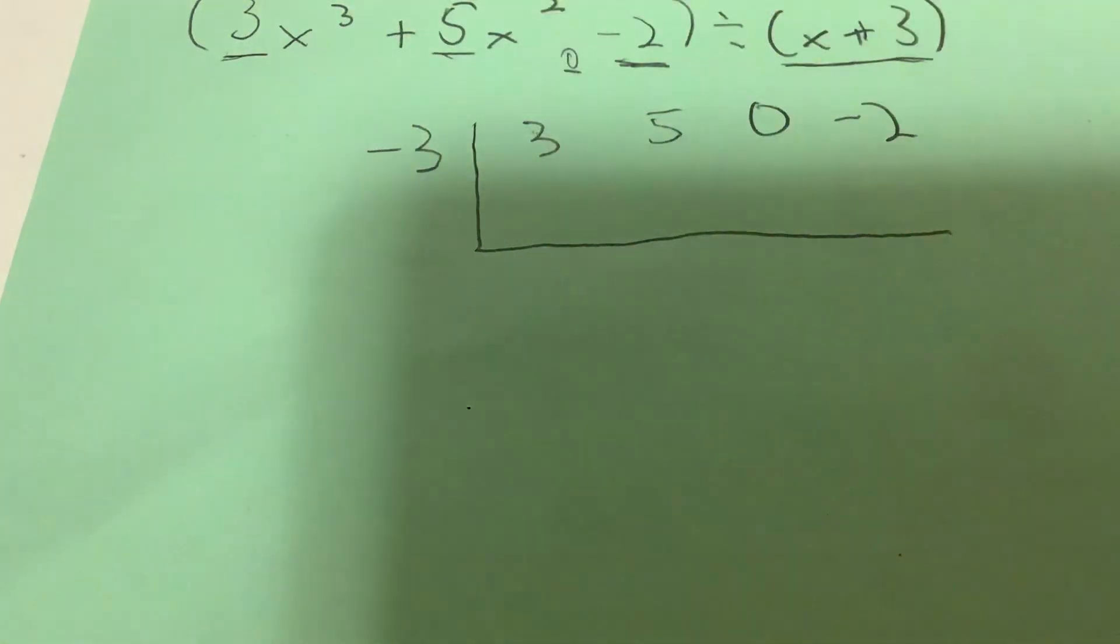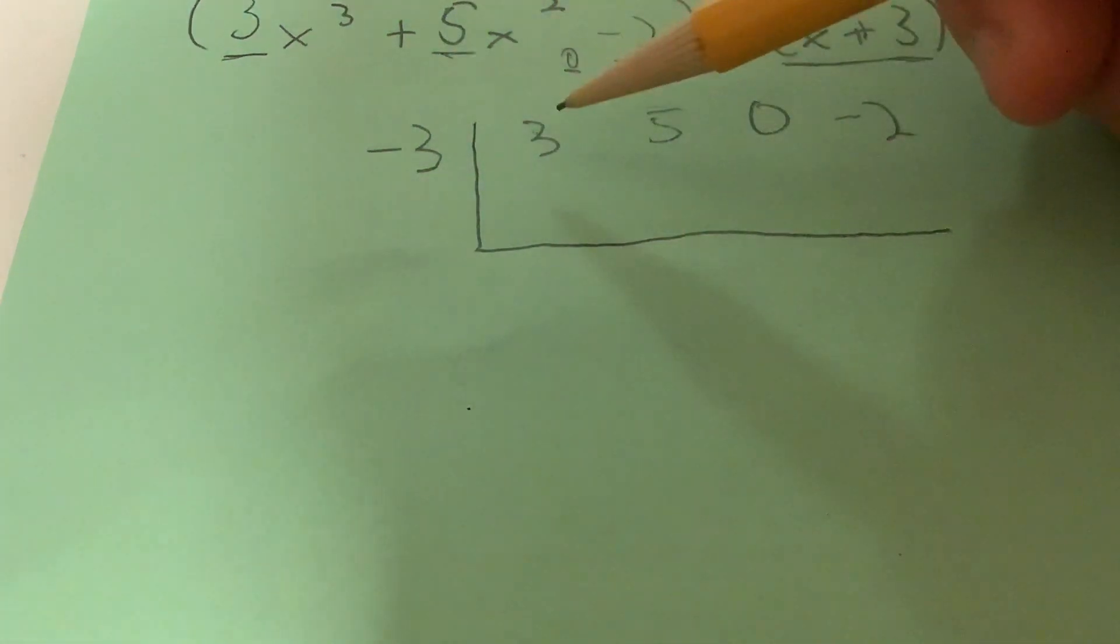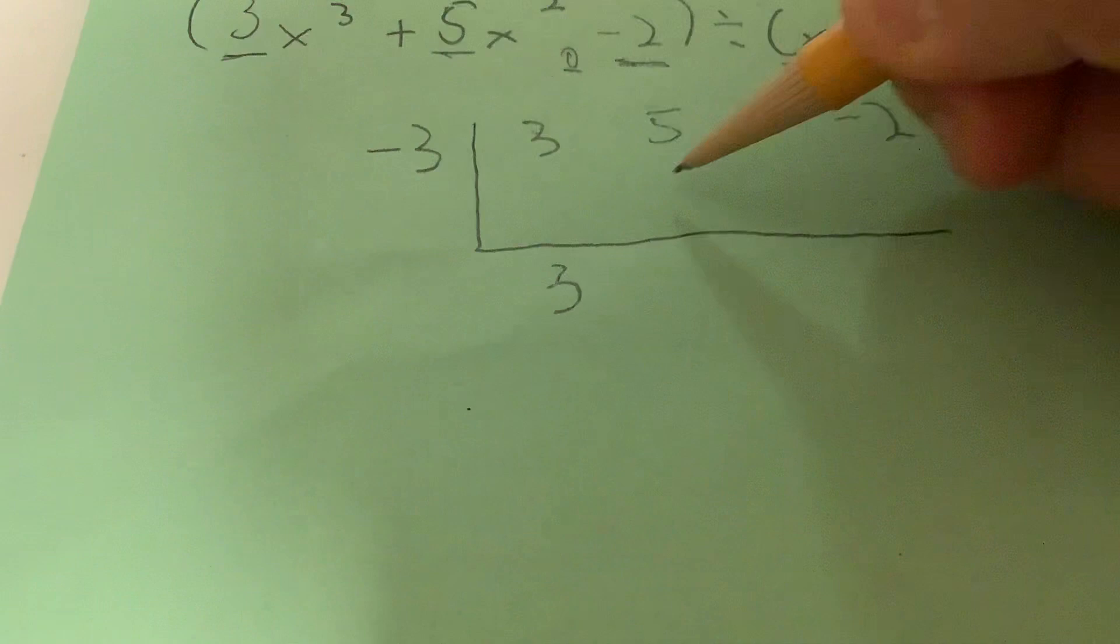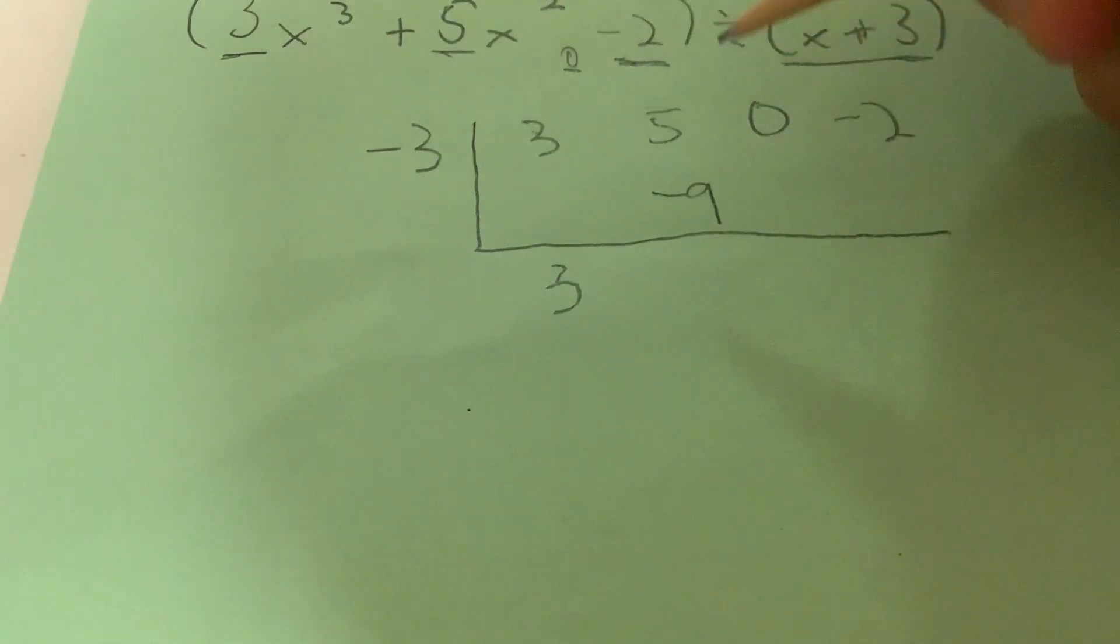So now, this is where you bring down the 3, just the first number here, and then you do negative 3 times 3, which is negative 9. Then you add 5 and negative 9, and then you get negative 4.